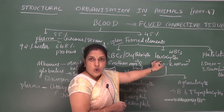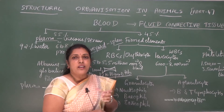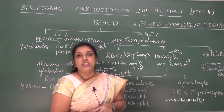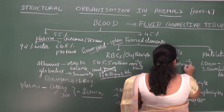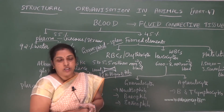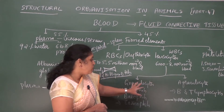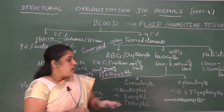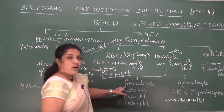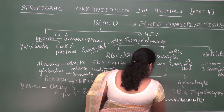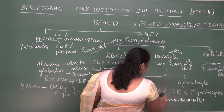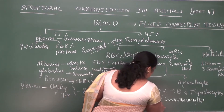Coming to WBCs — they are also called leukocytes or colorless cells. Nearly 6,000 to 8,000 WBCs are present per cubic millimeter of blood. These leukocytes are nucleated. They are classified into granulocytes and agranulocytes. Granulocytes have granules inside the cytoplasm. Under granulocytes we have neutrophils (60 to 65 percent), basophils (0.5 to 1 percent), and eosinophils (2 to 3 percent).